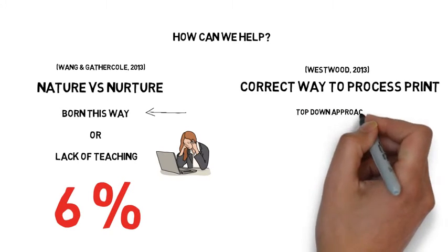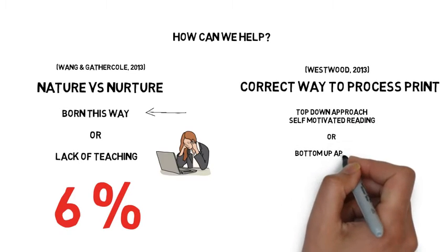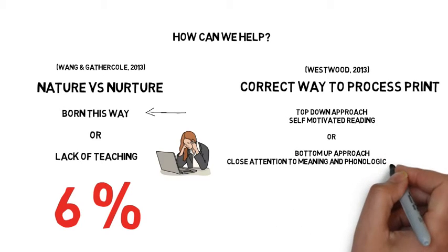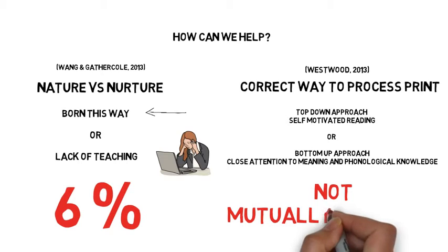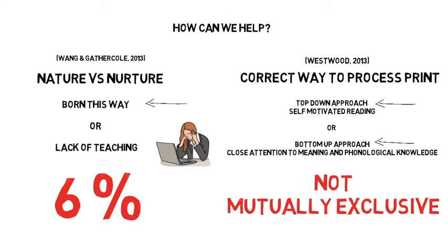The second common argument on the correct way to process print argues whether a top-down approach is sufficient to produce a proficient reader or if a bottom-up approach works best. The researchers concluded that neither is mutually exclusive. Both approaches should be used in unison to help readers understand the complexities behind learning to read.